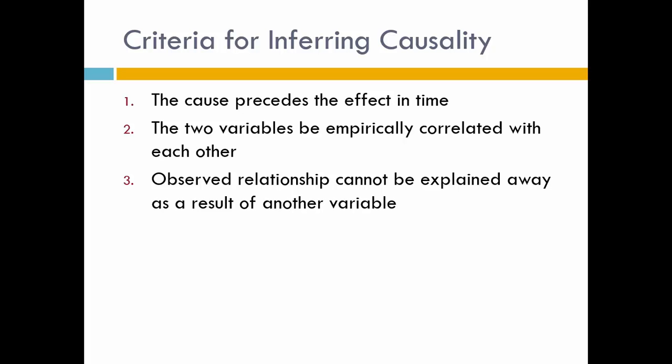The first thing we need to talk about is causality. Causality means if we're doing a study and we want to find out if one thing causes another — if something predicts an outcome — we need to follow some criteria so that when our results show that, we can actually truly believe that's what happened. There are three criteria for inferring causality. The first one is the cause precedes the effect in time.